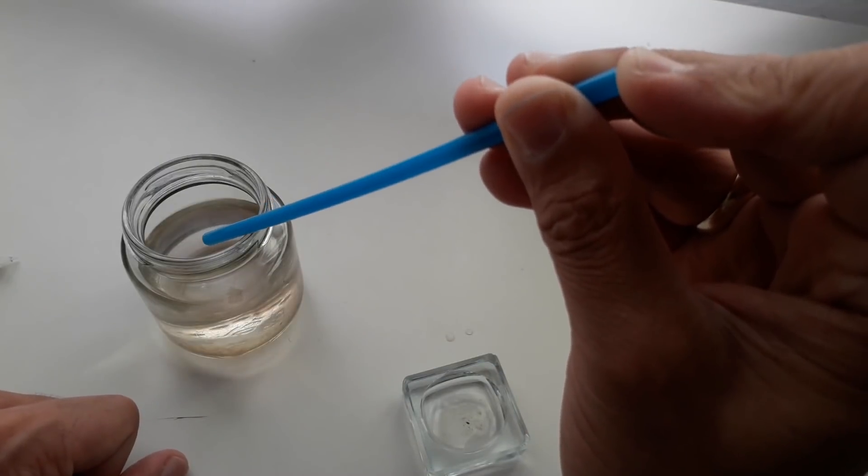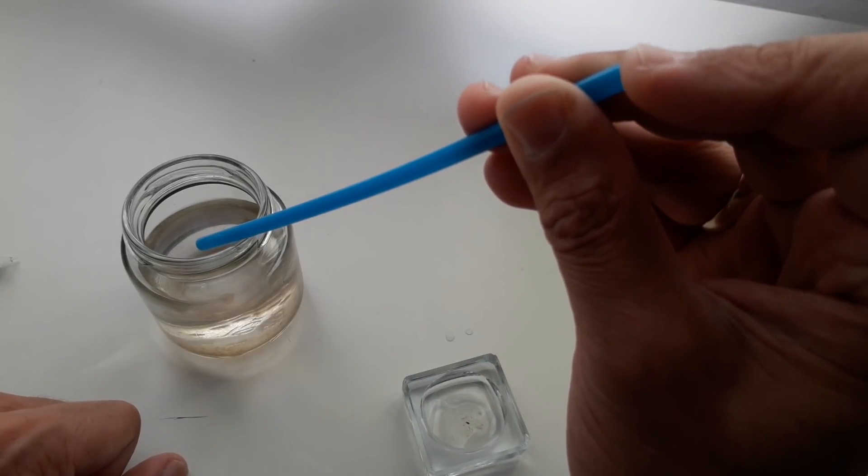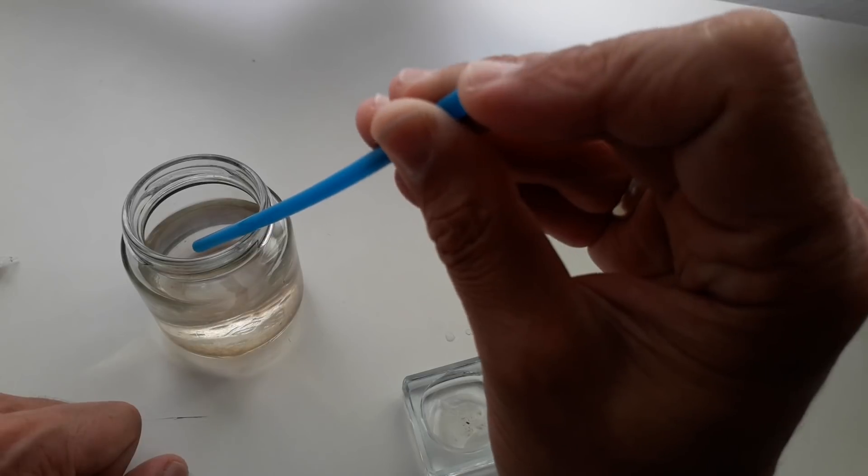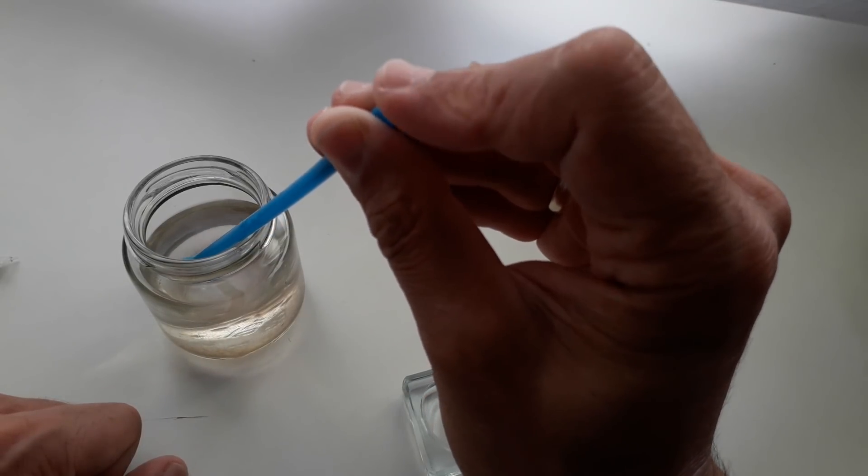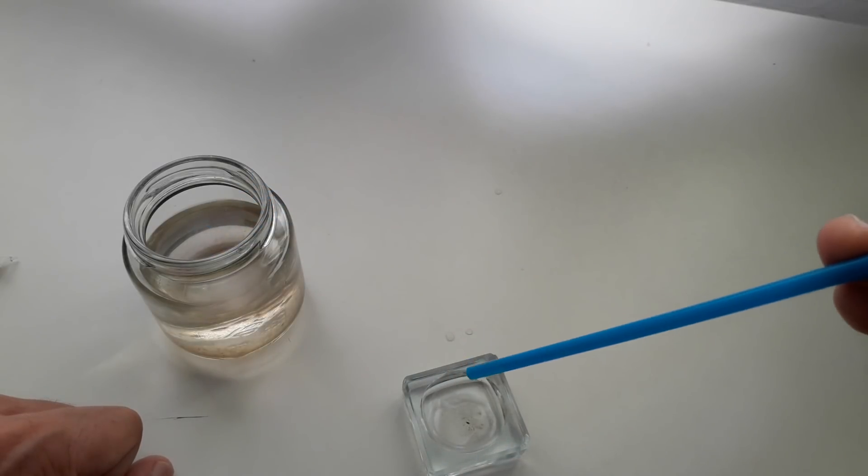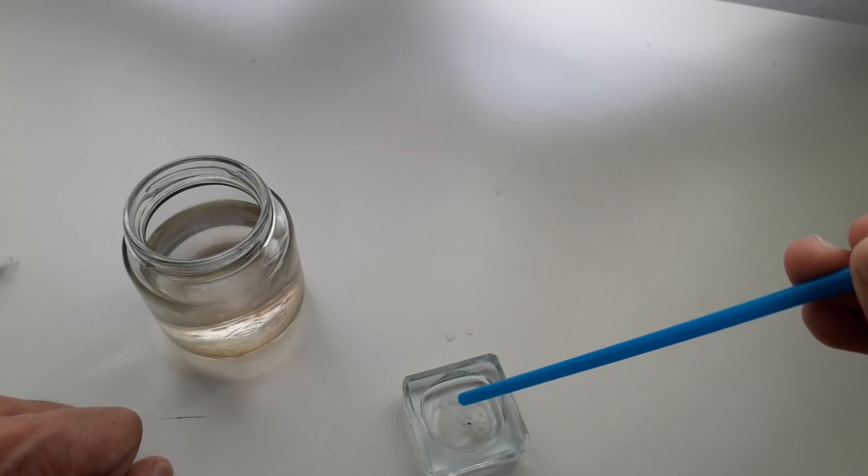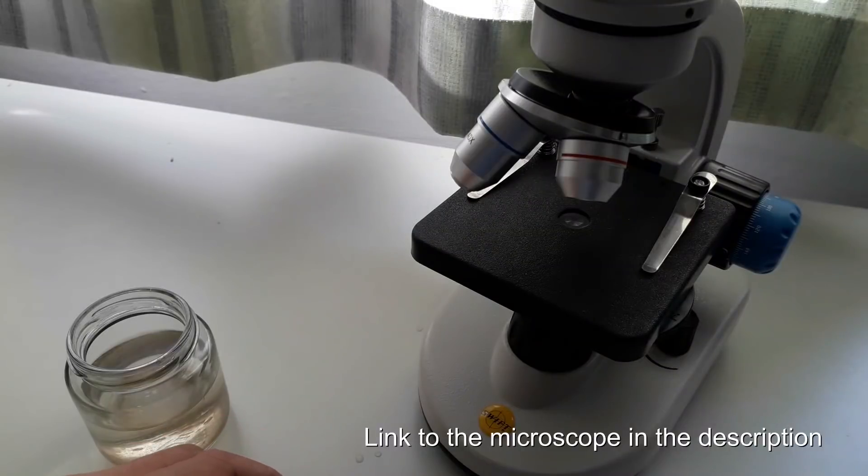If you want to catch the Daphnia, what you do is you need a plastic straw. You place your finger on top of the straw, you insert the straw into the water sample, and then you quickly let go and close it again. Then you can transfer the liquid into a new container, and that's the way that works quite well.